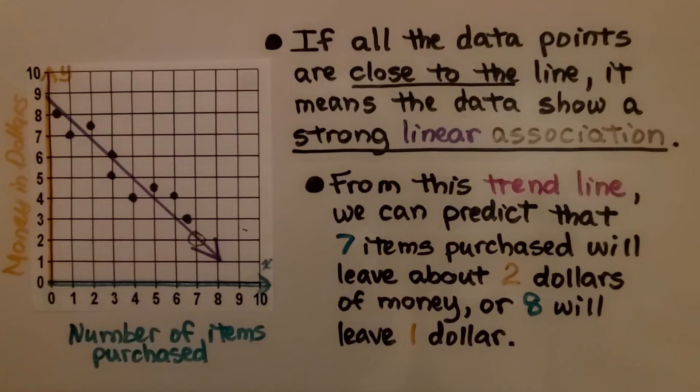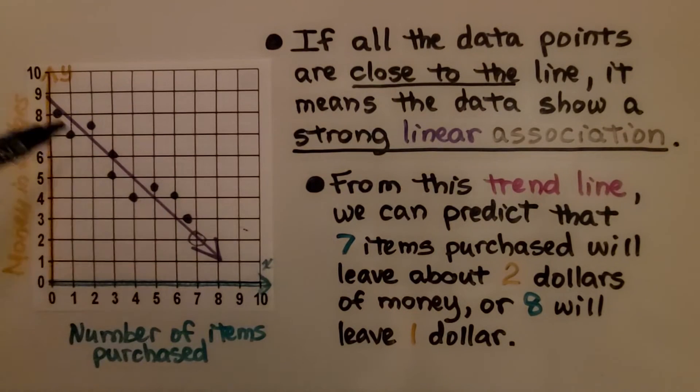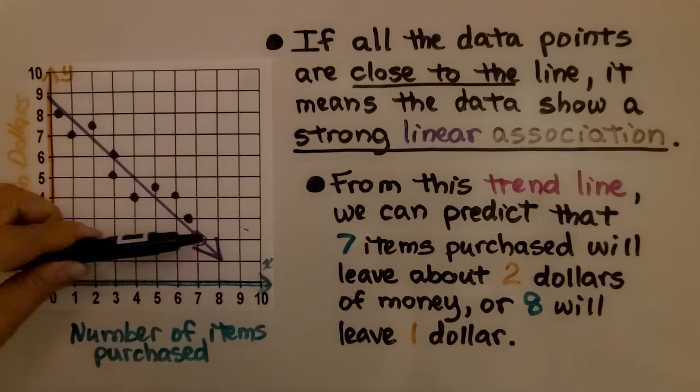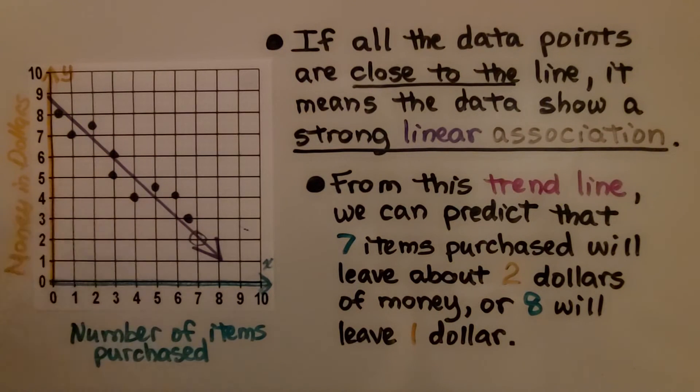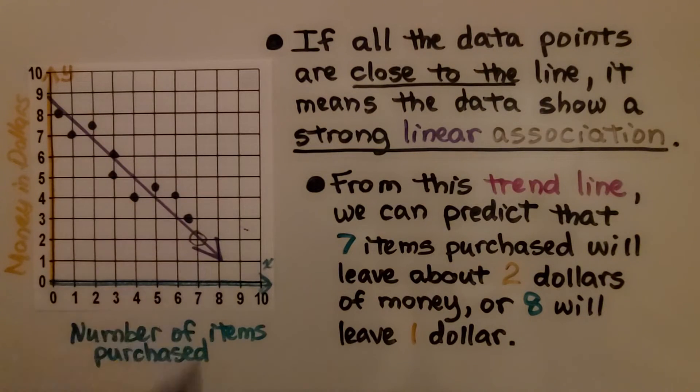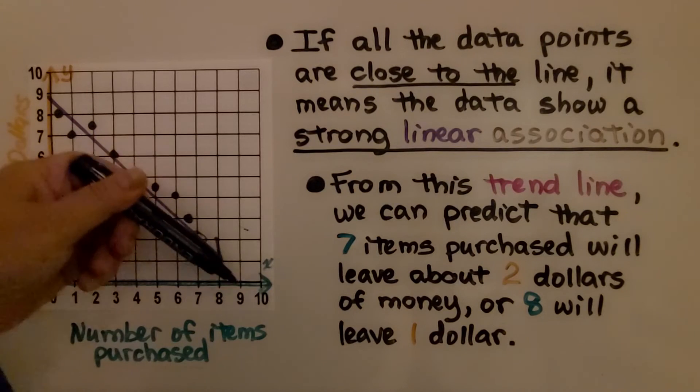If all the data points are close to the line, it means the data show a strong linear association. From this trendline, we can predict that seven items purchased will leave about $2 of money, or that eight items purchased will leave about $1 of money. We can see the trend of what's happening.